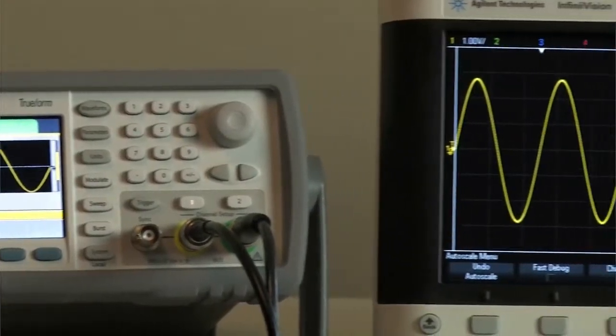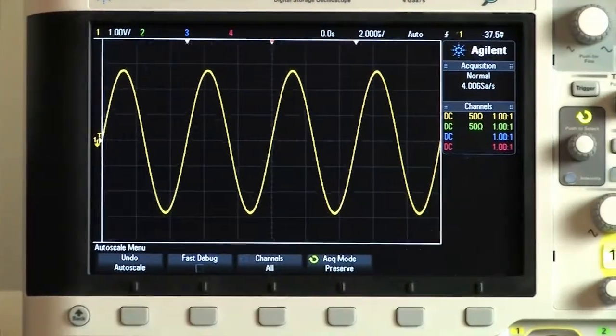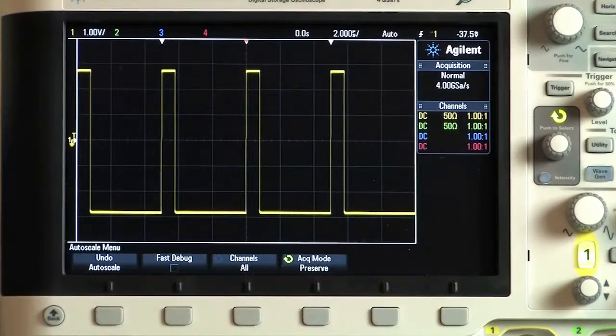Most generators on the market have reduced bandwidth in pulse mode, but with the 33500B series you get full bandwidth for sine, square, and even pulse waveforms.